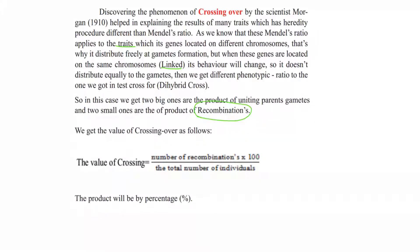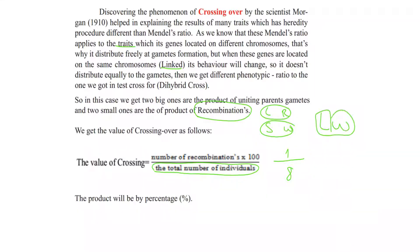We get the value of crossing over as follows: the value of crossing over equals the number of recombinant organisms divided by the total number of organisms, giving the percentage of crossing over. For example, if eight organisms are formed but only one of them shows a recombinant combination — like long and white together instead of the linked long and red — then that organism is recombinant. One from eight gives a percentage of about 12.5% crossing over.